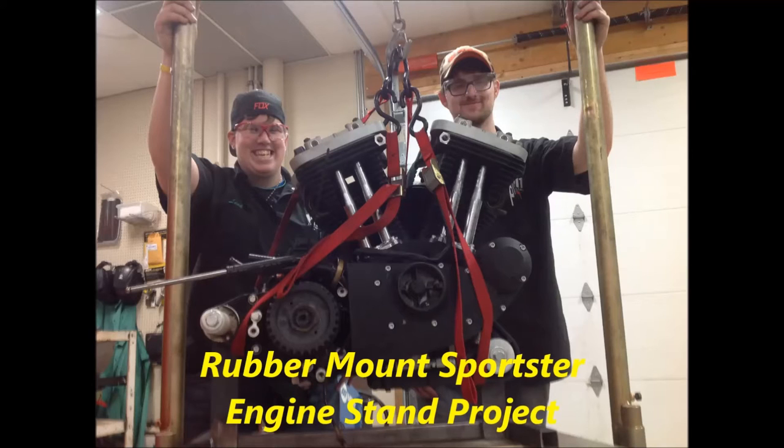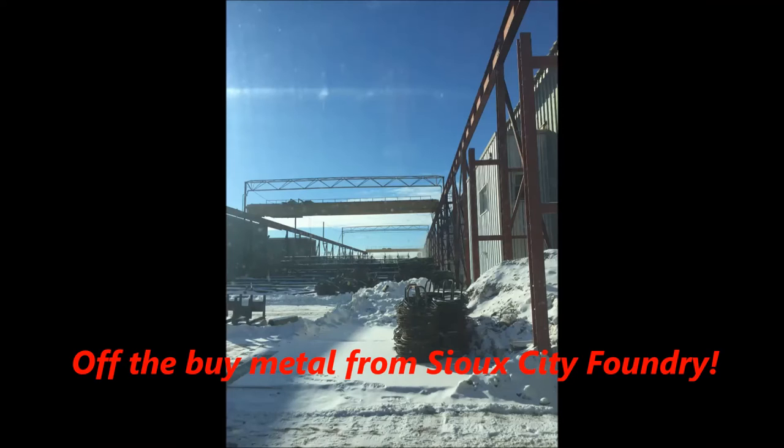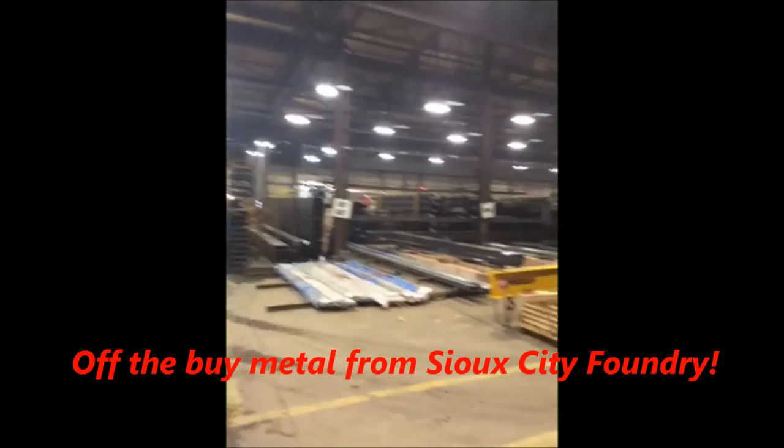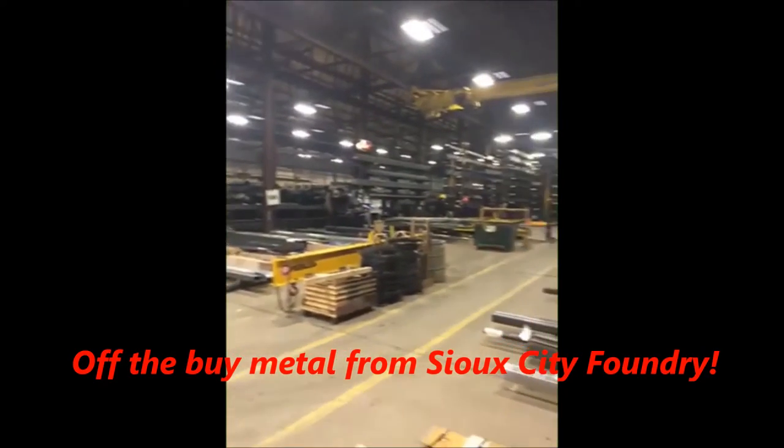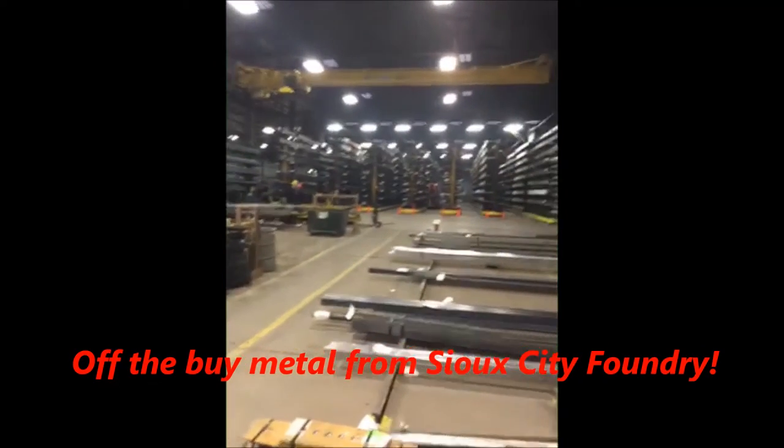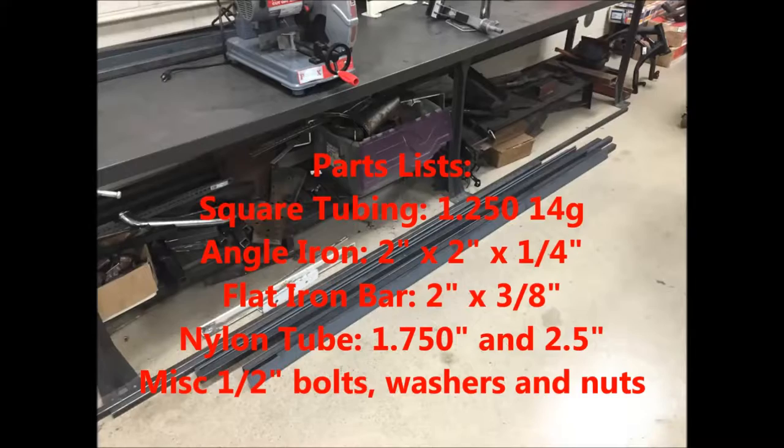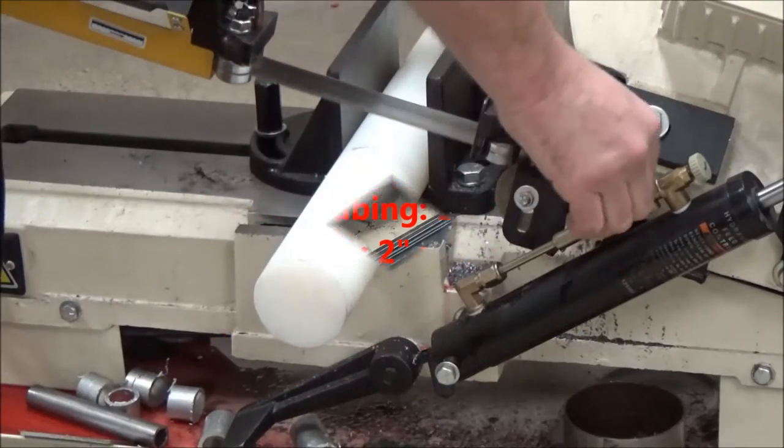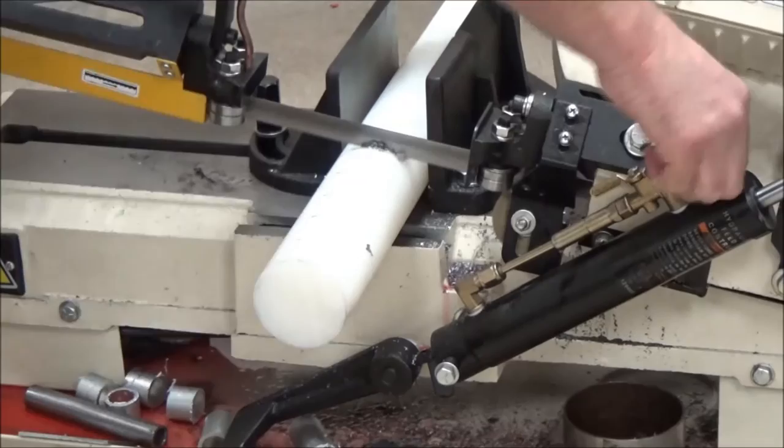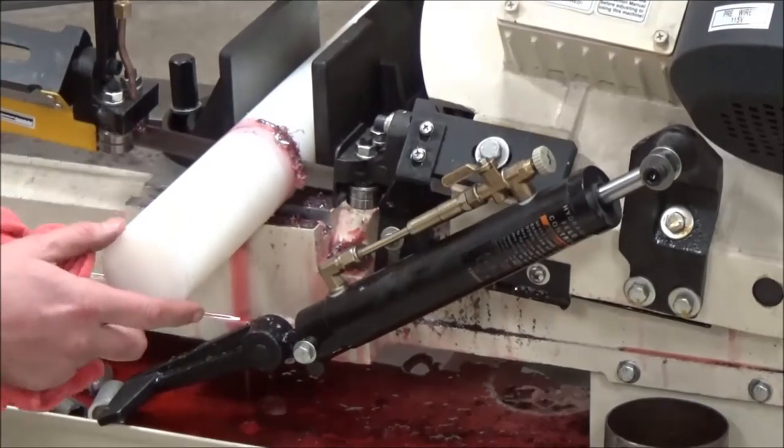As you can see here we made engine table mount stands for the rubber mounted Sportster engines. When we went to source these out commercially they just weren't available except from Harley-Davidson which makes a really cool one that turns on its side, but just for the cost and what we needed it just wasn't necessary.